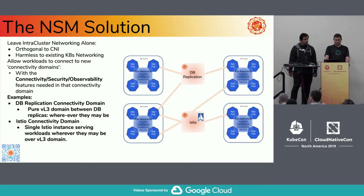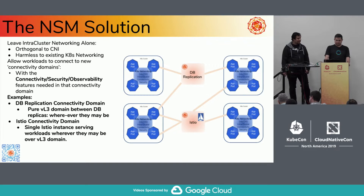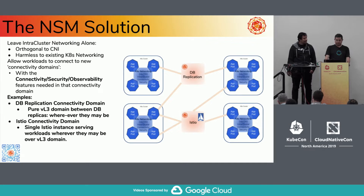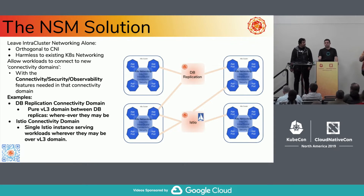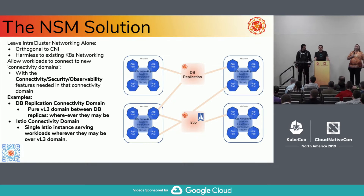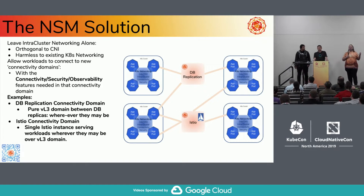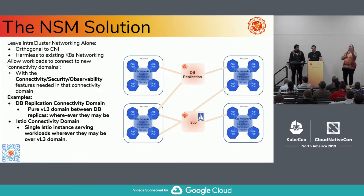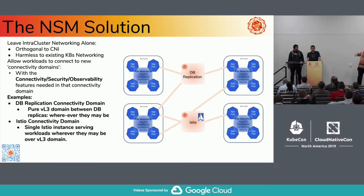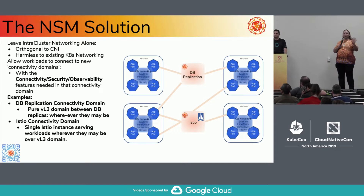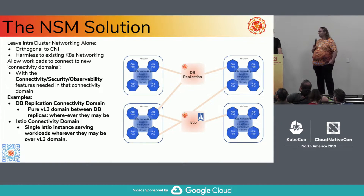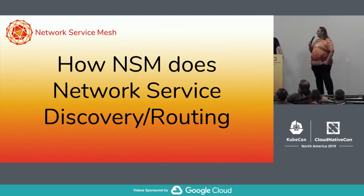Two examples we have here: one is a DB replication connectivity domain, which is basically giving you L3 connectivity between any workloads connected to it. You can run whatever protocol you use to replicate data between your databases — which is not going to be HTTP most of the time — and the only entities talking on this domain are those authorized to connect to the database replication domain. We also have an example with a single instance STL, but we'll talk more about that as we get to the examples. I'm going to hand off to Nikolai now.